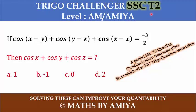This question is a perfect Trigo challenger for SSC Tier 2, or even CAT candidates can solve this question. The question is: cos(x-y) + cos(y-z) + cos(z-x) equals minus 3 by 2. Then find the value of cos x + cos y + cos z.